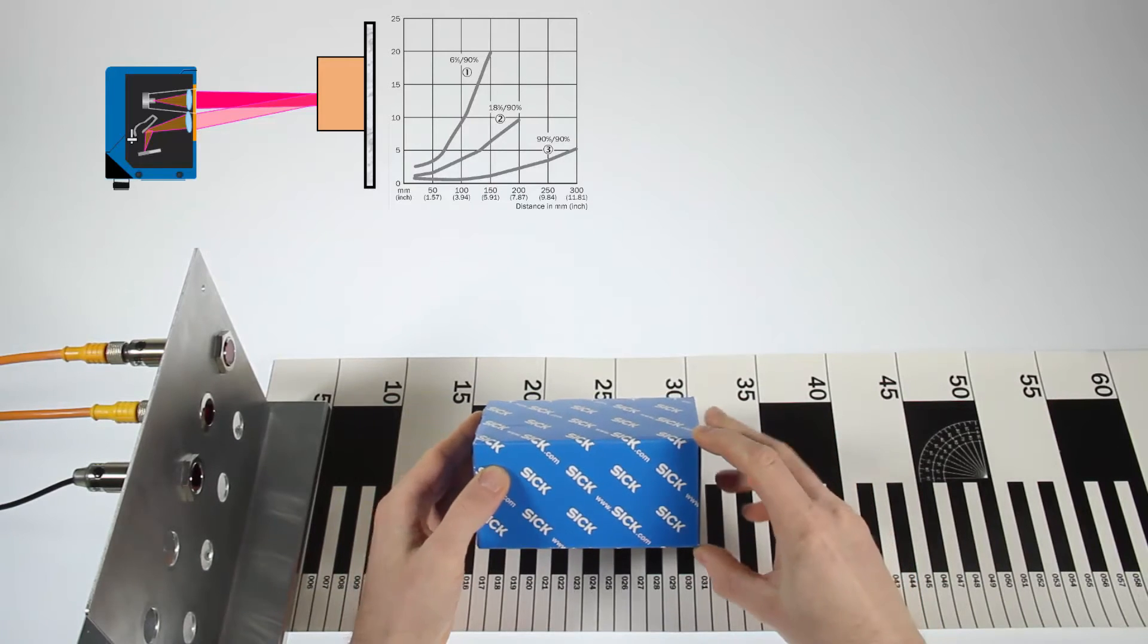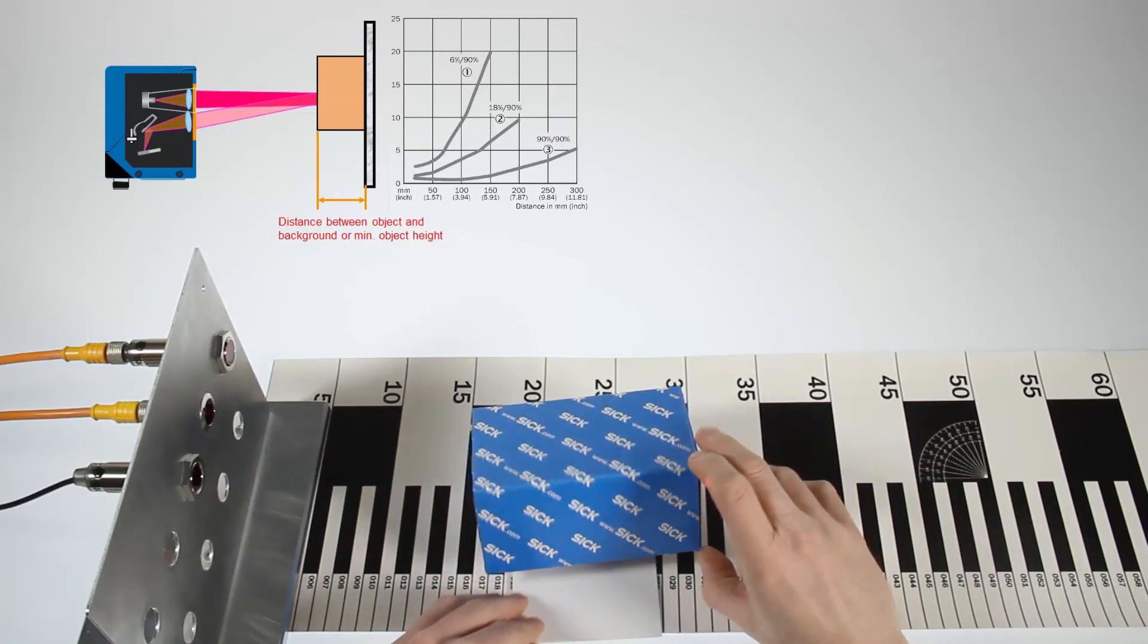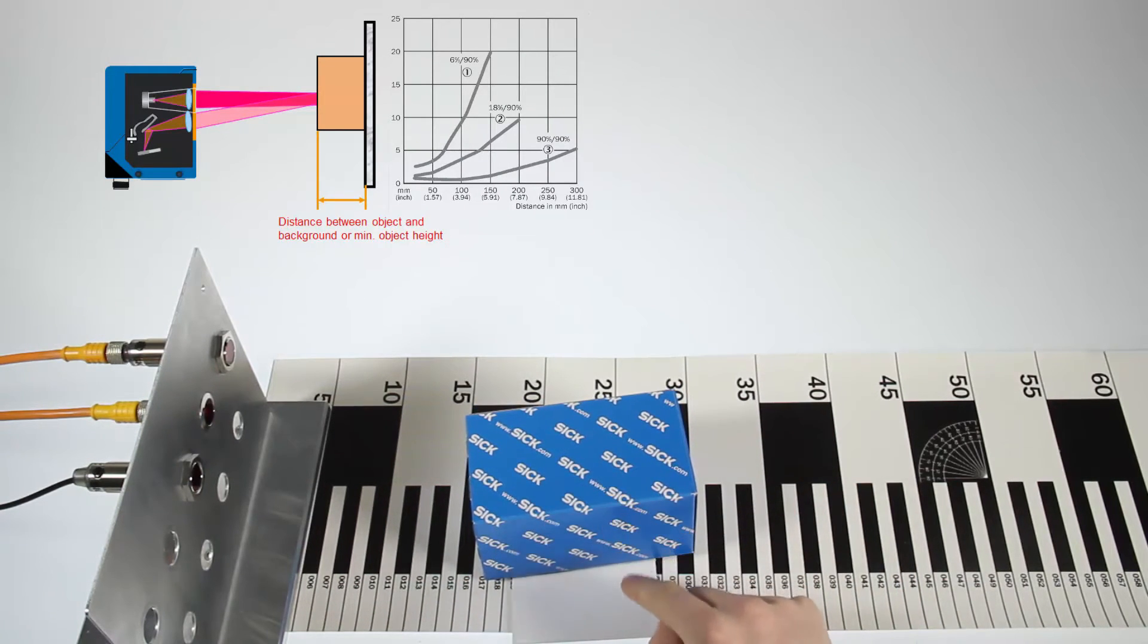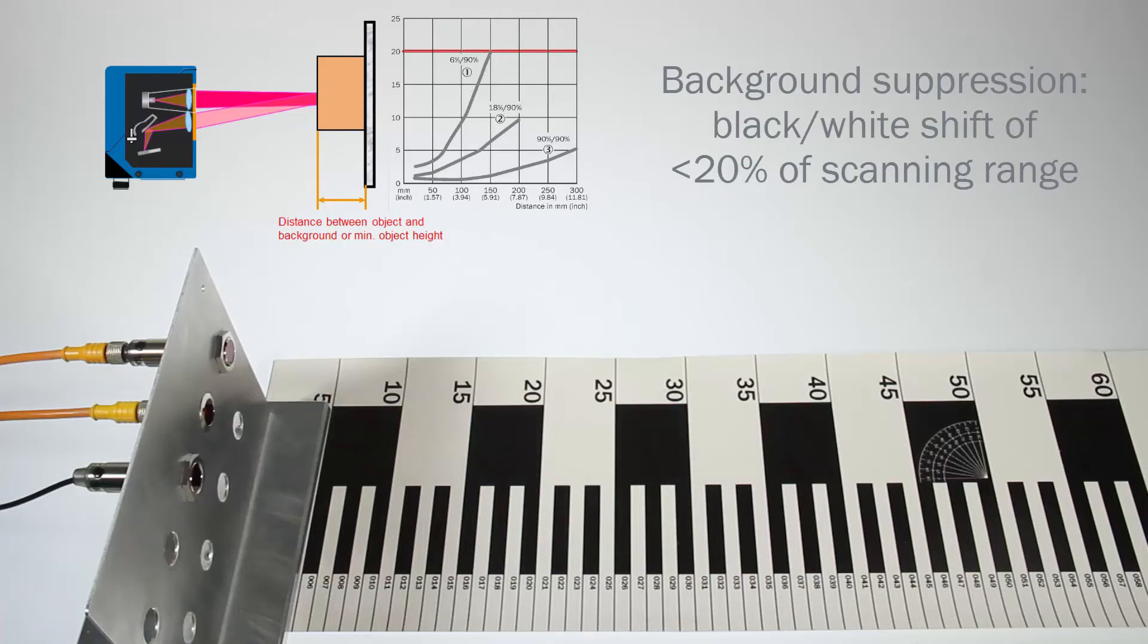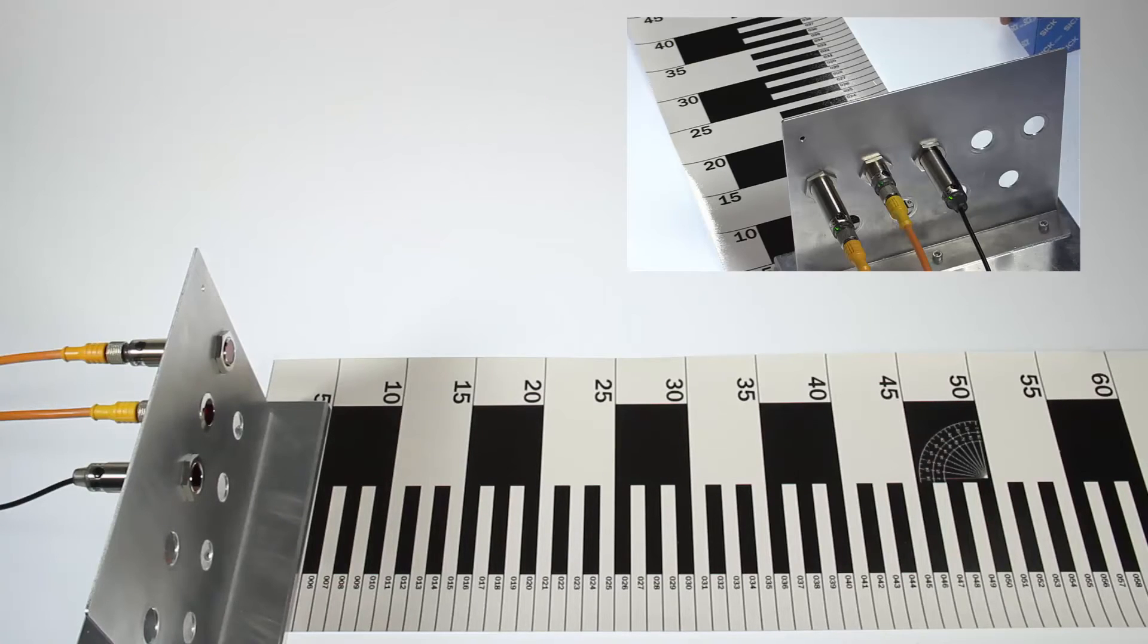just the same as the minimum object height or the necessary difference between object and background. To make use of the maximum performance of our background suppression versions, we recommend a black-white shift which is less than 20% of the set scanning range.